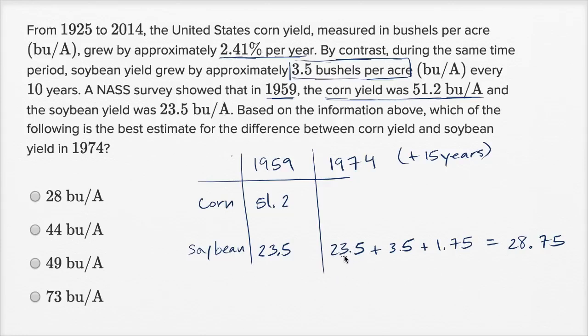Did I do that right? 23.5 plus 3.5 is going to be 27, 28.75. Yep. So if we grow 3.5 bushels per acre in 10 years, we're going to grow 1.75 bushels per acre in the next five years. That's the 15 years. Right over here, this is 10 years plus five years. So we get to 28.75.